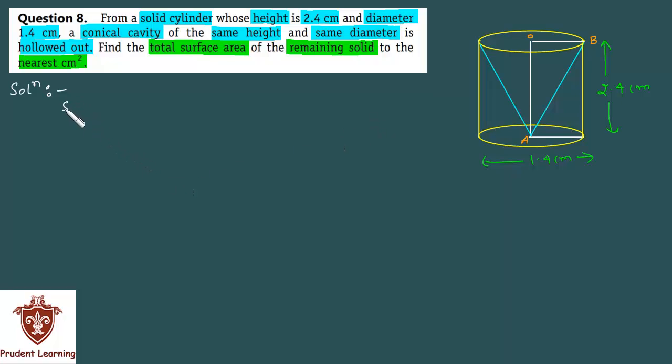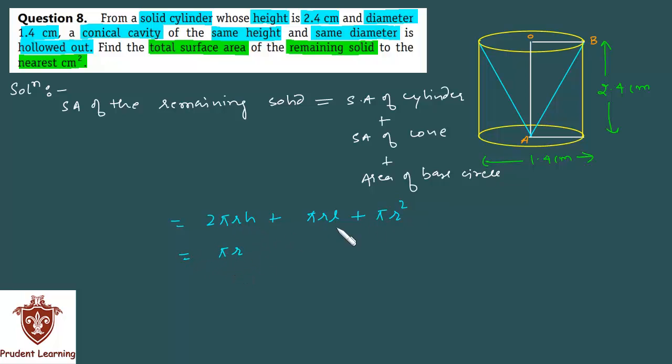Surface area of the remaining solid is surface area of cylinder plus surface area of cone plus area of base circle. Surface area of cylinder is given by 2πrh and surface area of cone is given by πrl and area of circle is πr². In this expression you will get πr common. Taking πr common we have πr(2h + l + r).